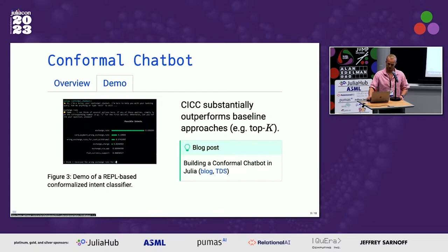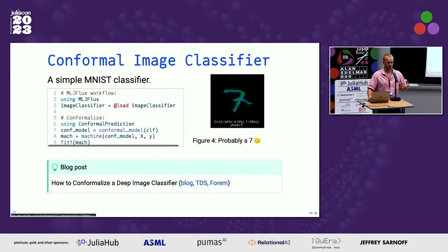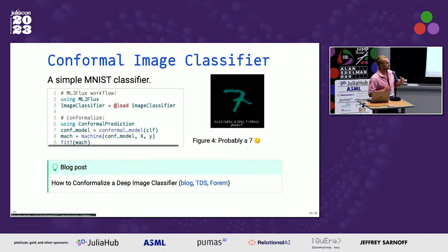It also works with image classifiers. Here we have an image of a handwritten seven from MNIST which could also maybe be a two. The conformal prediction set addresses this predictive uncertainty: it tells you seven is the most likely answer but there's also a small probability it's a two or four. Certain digits that are visually similar tend to appear together in prediction sets.